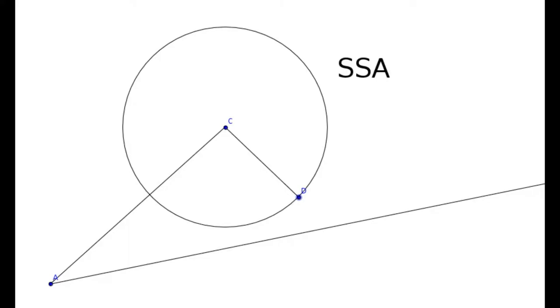Here we're representing the side-side-angle situation for solving triangles geometrically. Here's the length of the first side, which corresponds to the diameter of this circle centered at C.